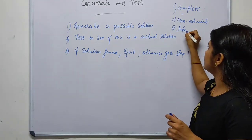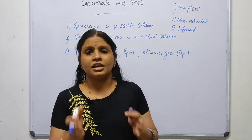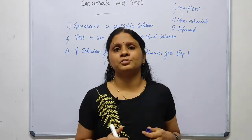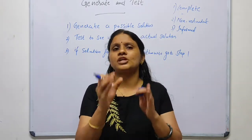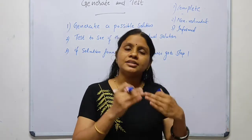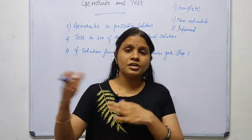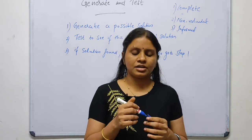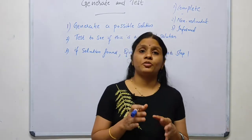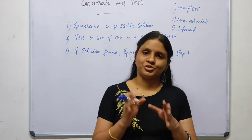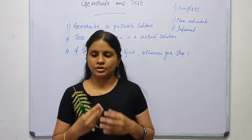The third property is that it should be informed. Informed means the generator should have some knowledge about the search space, similar to informed search, so that it can estimate the path cost to the goal state. These are the three important properties of a good generator: complete, non-redundant, and informed.